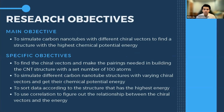Moving on to our objectives, our main objective was to simulate carbon nanotubes with varying chiral vectors to find a structure with the highest chemical potential energy. Specifically, we wanted to find the chiral vector pairings needed to build CNT structures with 100 atoms, simulate them and get their chemical potential energy, sort the data by highest energy, and use correlation to find the relationship between chiral vectors and energy.